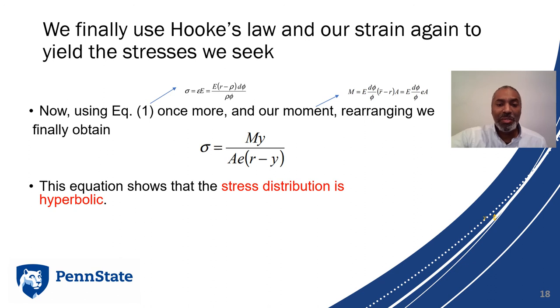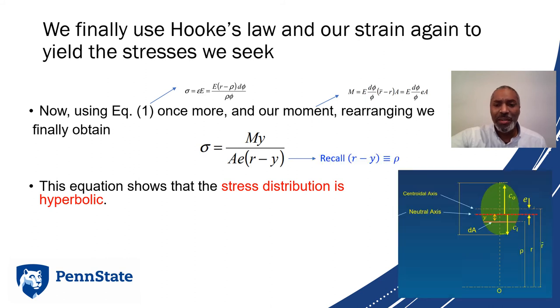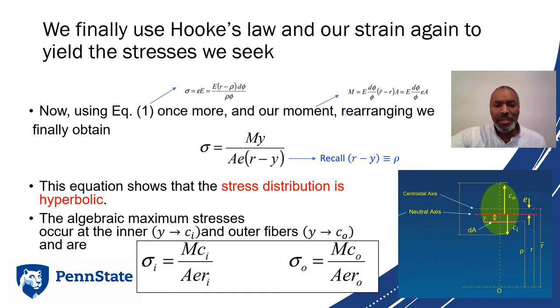This equation shows that the stress is hyperbolic. As r minus y goes to zero, the stress would go to infinity. But luckily r minus y doesn't go to zero, because r minus y equals rho, the distance from the origin into our body. The distance from that rho to the neutral axis is our y. Remember, y is positive as we move inward.